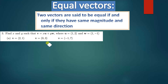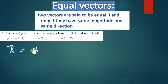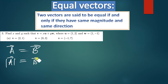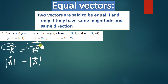Two vectors are said to be equal if and only if they have the same magnitude and the same direction. So if vector a is equal to vector b, this means that the magnitude of a should be equal to the magnitude of b, and apart from that the directions should always be the same.